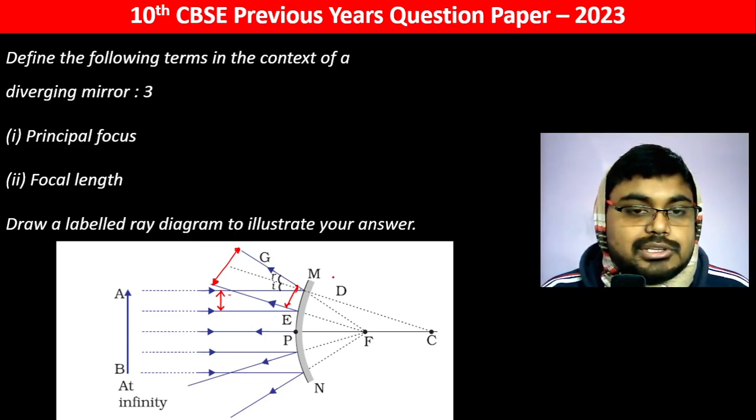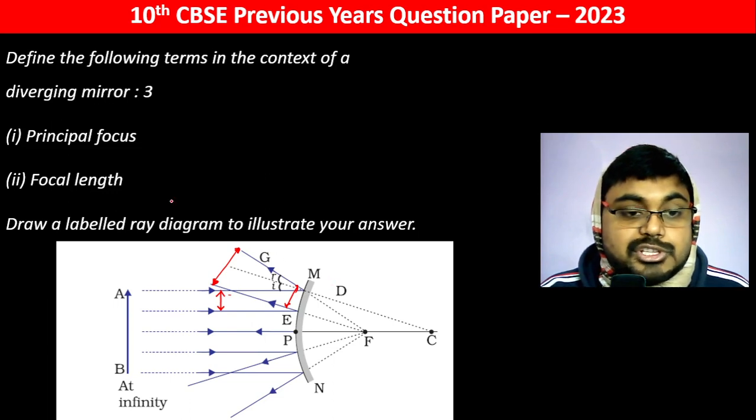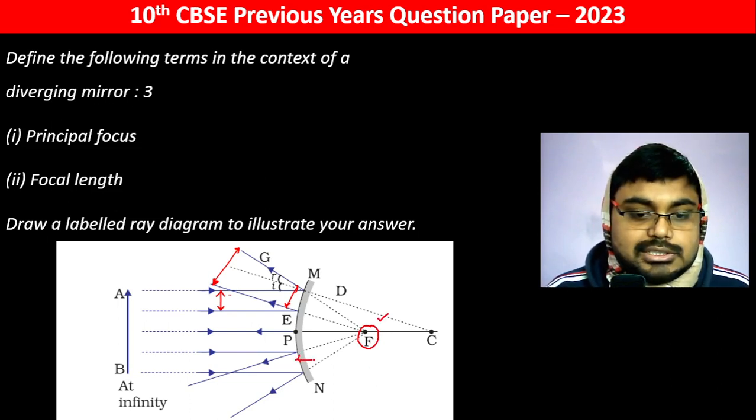We have to define the terms in the context of a diverging mirror. We have to tell the principal focus and the focal length.